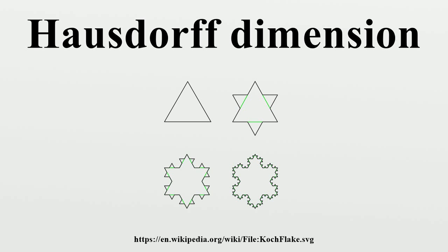Hausdorff dimension and Minkowski dimension: The Minkowski dimension is similar to, and at least as large as, the Hausdorff dimension, and they are equal in many situations. However, the set of rational points in [0,1] has Hausdorff dimension 0 and Minkowski dimension 1. There are also compact sets for which the Minkowski dimension is strictly larger than the Hausdorff dimension.